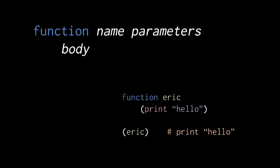So here, for example, we create a very simple function called Eric. This function Eric has no parameters, and it just has one statement in its body, print hello. So having created this function, we can then invoke it by simply putting its name in parentheses. And because it takes no operands, we just write the function name in parentheses. When we invoke this function Eric, all it does is print hello.